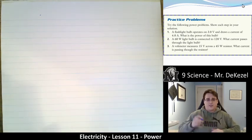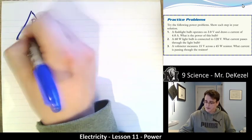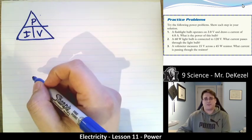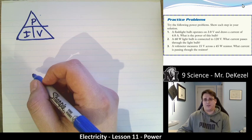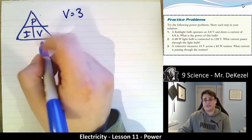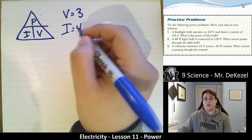So let's write down our triangle again just to make some practice. Power, current, and voltage. So our first problem. A flashlight operates on three volts and has a current of four. What is the power?